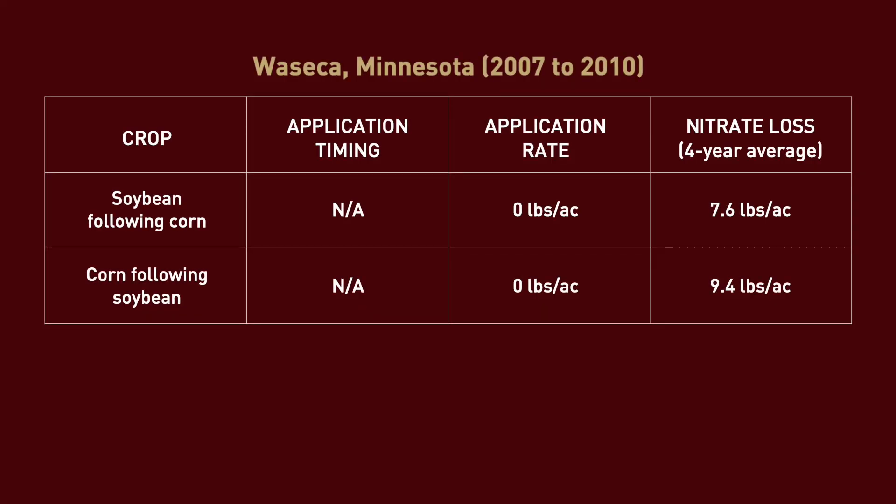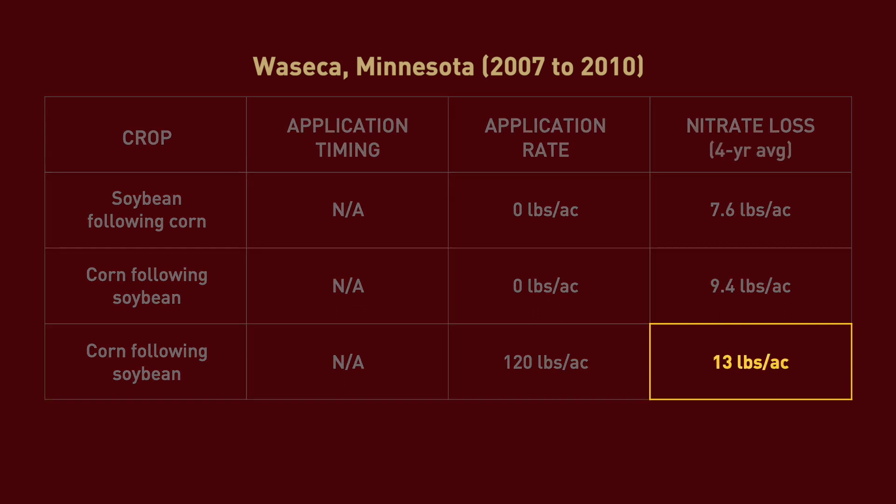Also note that when the BMP rate was applied, the N loss numbers go up, but are still only slightly higher than when no N was applied. This means that applying less than the BMP N rate only has a minimal impact on water quality while severely affecting productivity and profitability.